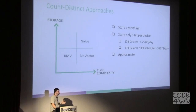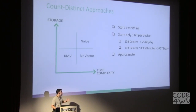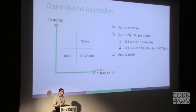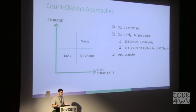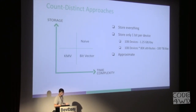There are different approaches for solving the count-distinct problem. The first, naive one is to just store all the events throughout the day, and then whenever I want to calculate how many unique devices I have, I go over all the events and do the calculation. This method is not efficient, both in terms of time complexity and storage.